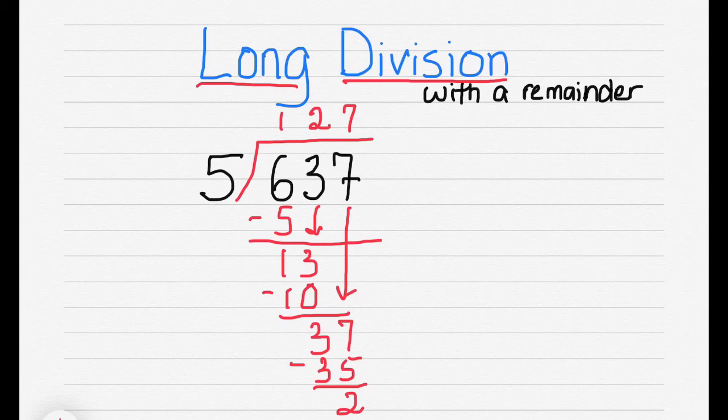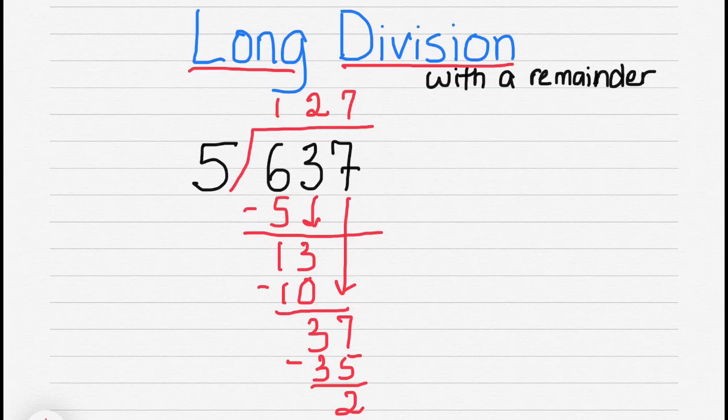And we subtract that. And we have 2. There's nothing else to bring down. So our remainder is 2. So we can write that as R2, or we can write that as 2 over our divisor, so 2 fifths. So the answer is 127 and 2 fifths.